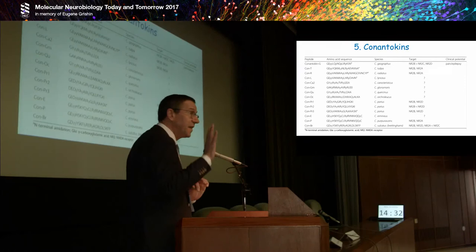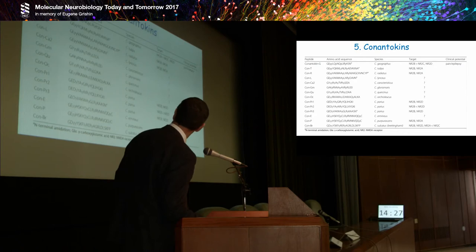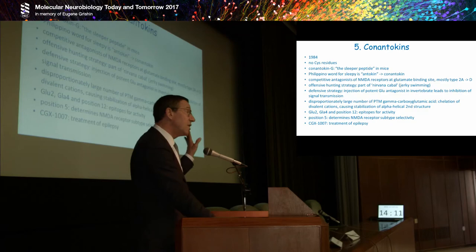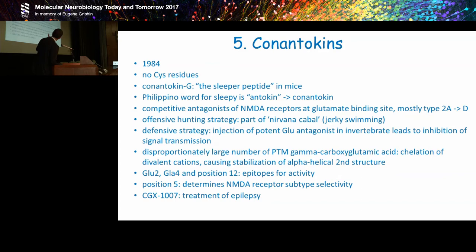The conantokins, we know more about. Approximately 15 representatives. Here, quite interestingly, you see a lot of gamma-carboxyglutamic acids. They are very much loaded with gamma-carboxyglutamic acid. We know them since 1984. They have no cysteine residues, so they are really disulfide-free. The name derives from the sleeper peptide in mice, conantokin. This relates to the original work by Olivera and collaborators in the Philippines. The Filipino word for sleepiness is antokin, so coming from Conus is logical—the conantokins. They induce sleep. What we know in terms of molecular target is that they are competitive antagonists of the NMDA receptors at the glutamate binding site, mostly type 2a and D. People think the Conus species uses these peptides in an offensive hunting strategy. It's part of the Nirvana cabal, corresponding to Olivera's theory. They produce a jerky-swimming behavior. But also in a defensive strategy, the injection of a potent glutamate antagonist in invertebrates leads to inhibition of signal transmission. This is very efficient in terms of defensive strategy.